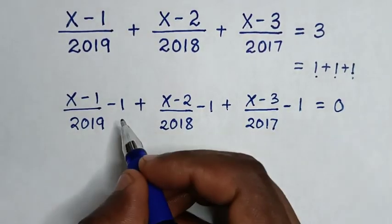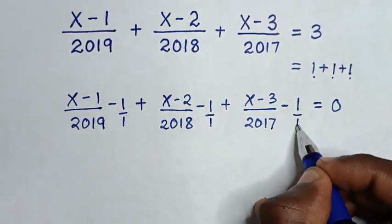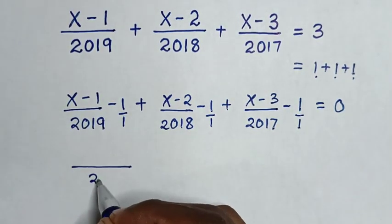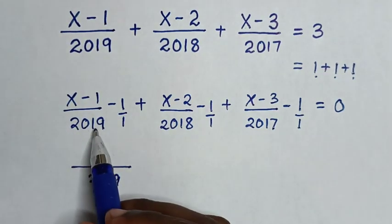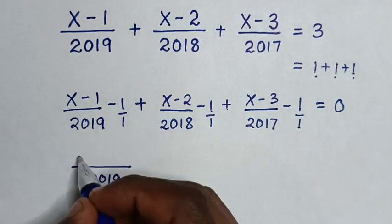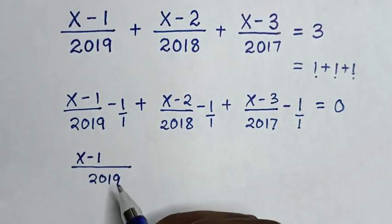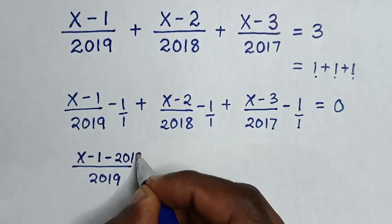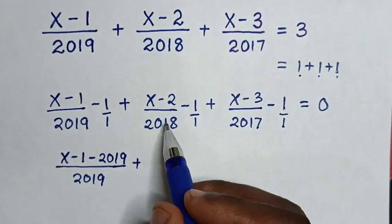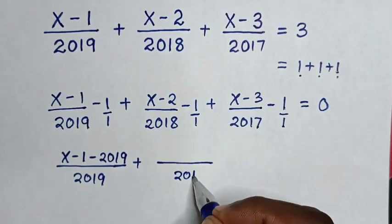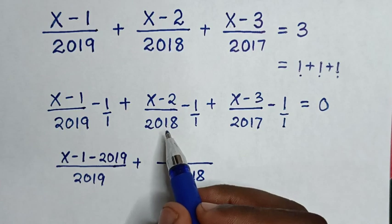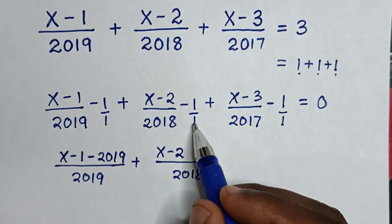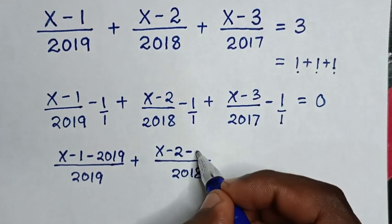Each 1 is the same as over 1. The LCM of the first pair of denominators is 2019. So 2019 divided by 2019 is 1, times (x minus 1) is (x minus 1); 2019 divided by 1 is 2019, times negative 1 is negative 2019. Then the LCM of the next pair is 2018; 2018 divided by 2018 is 1, times (x minus 2) is (x minus 2); 2018 divided by 1 is 2018, times negative 1 is negative 2018.